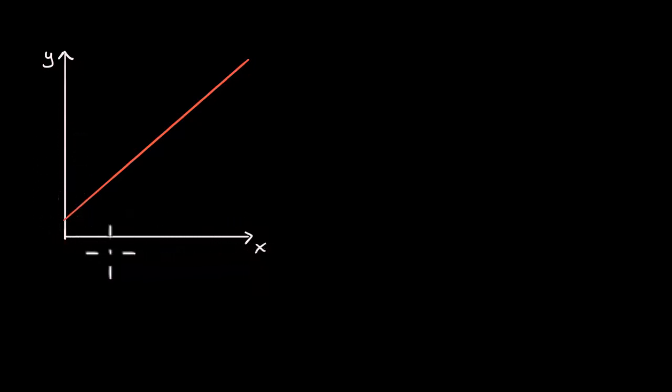So for example, here I have our classic y-axis in the vertical direction and x-axis in the horizontal direction. And if I wanted to figure out the slope of this line, I could pick two points, say that point and that point.